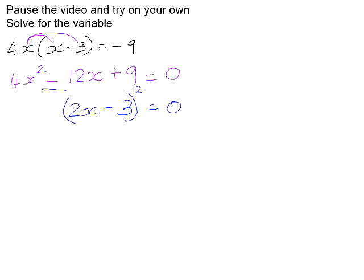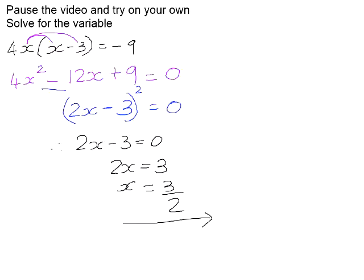So that means that we've only got one factor here, it's a repeated factor. So therefore, if 2x minus 3 is equal to 0, we will have a situation where our left-hand side equals our right-hand side. So we add 3 to both sides and then divide by 2. So this equation only has one possible solution.